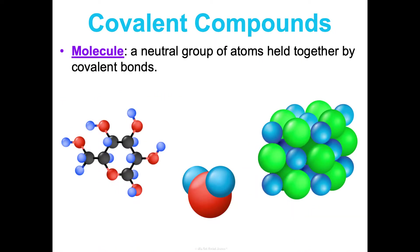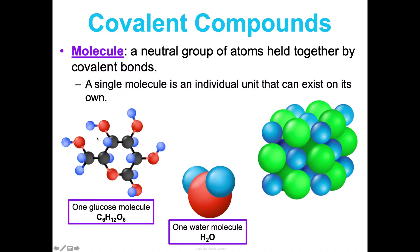A reminder that the term molecule is specific to covalent compounds. It is a neutral group of atoms held together by covalent bonds. A single molecule is an individual unit; it exists on its own. For example, here's a picture of one glucose molecule C6H12O6, and here's a picture of one water molecule H2O. These are both molecules, and this molecular formula is its chemical formula in these covalent compounds.